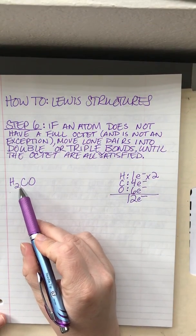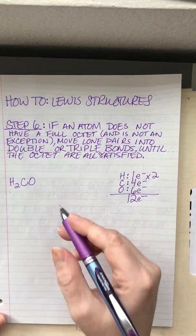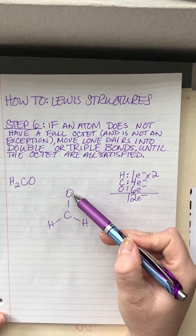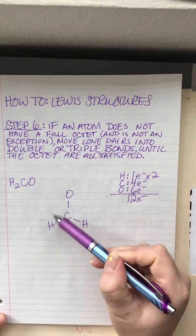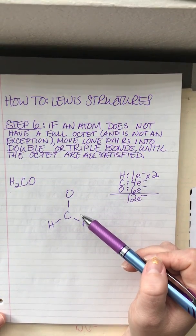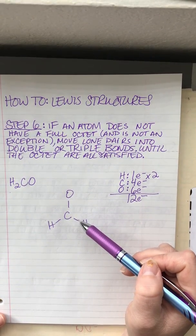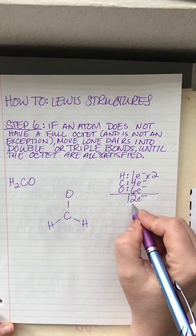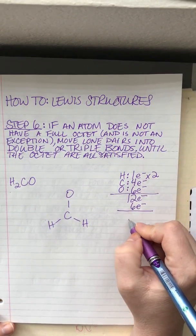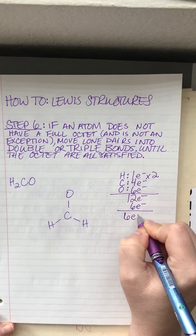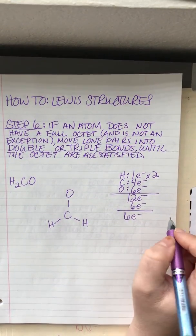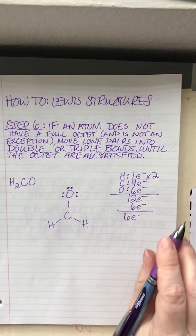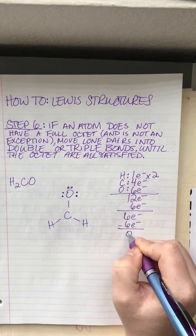This carbon is going to be in the center. I put the oxygen on top and the two hydrogens on the bottom — where I place these atoms around the carbon does not matter at this point. We used six electrons in bonding, so subtracting that from our total, we have six electrons left over. I'll put three lone pairs to account for those six electrons, and now we've used all of them.